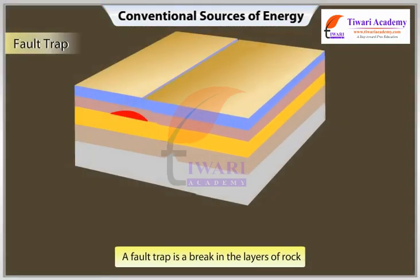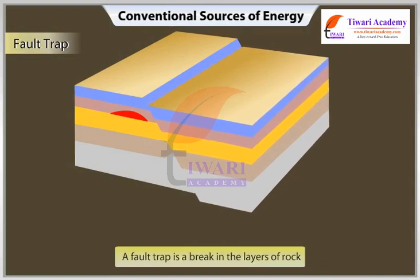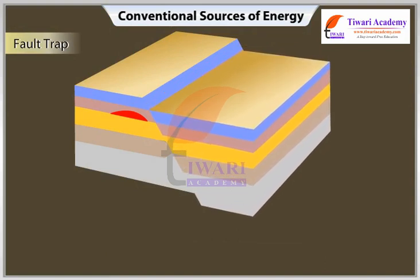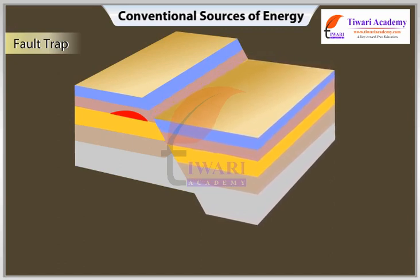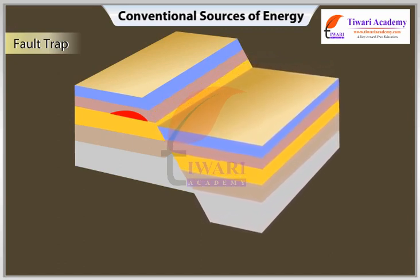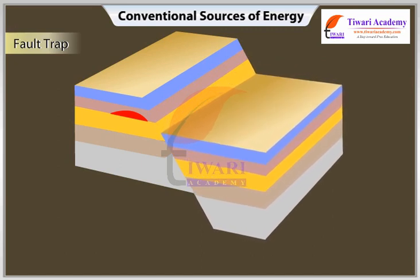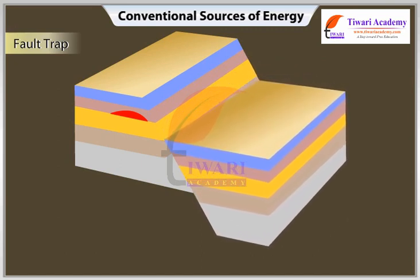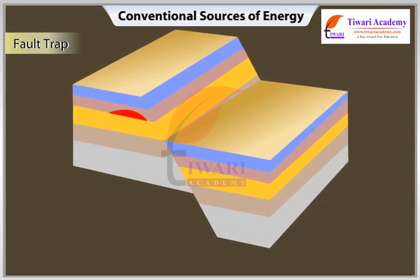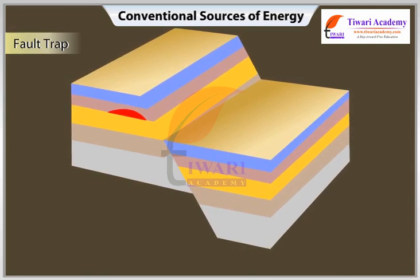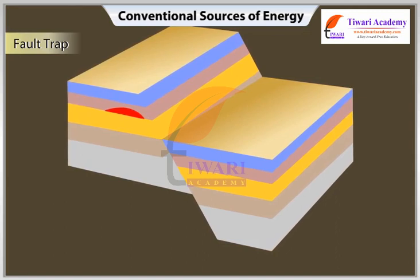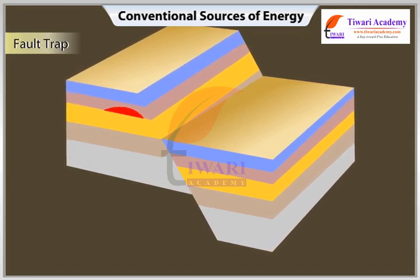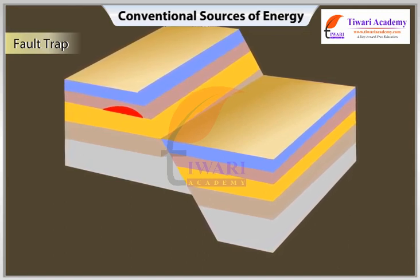A fault trap is a break in the layers of rock. It occurs when formations on either side of a fault move and come to rest in a configuration that traps oil. Often an impermeable formation on one side of the fault moves opposite a porous and permeable formation on the other side. The petroleum migrates into the porous and permeable formation and gets trapped by the impervious layer at the fault line.